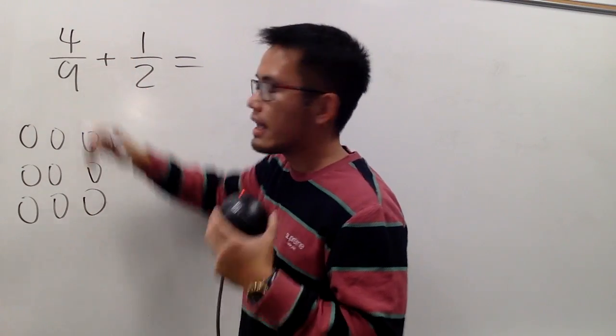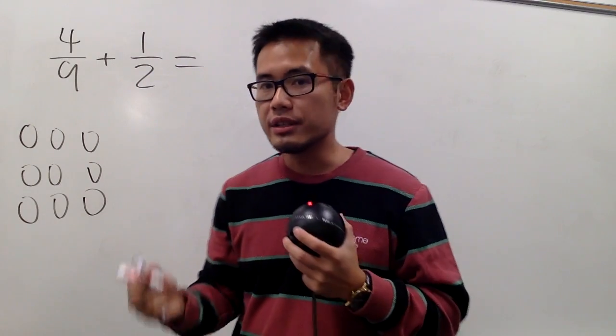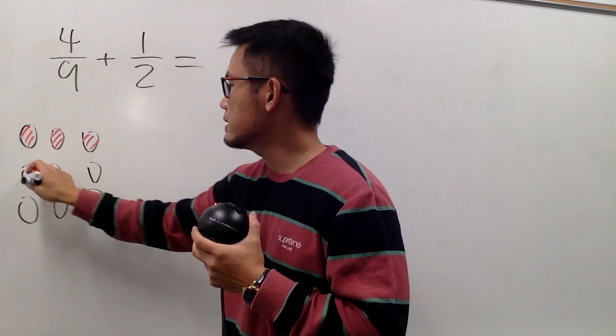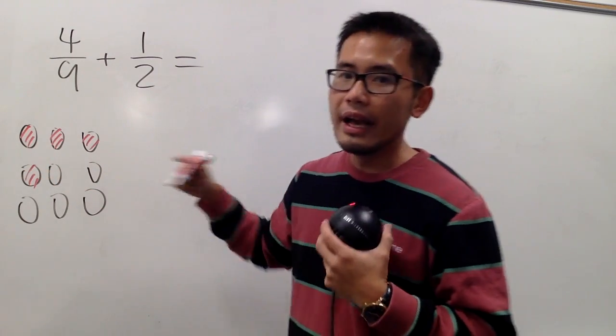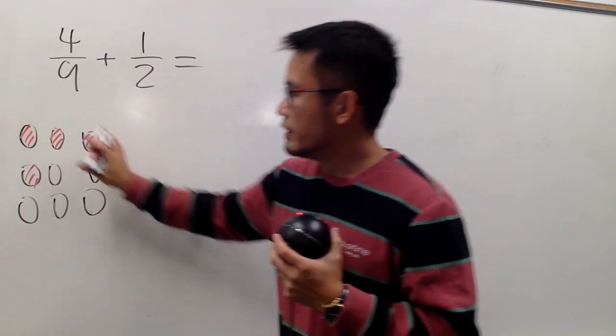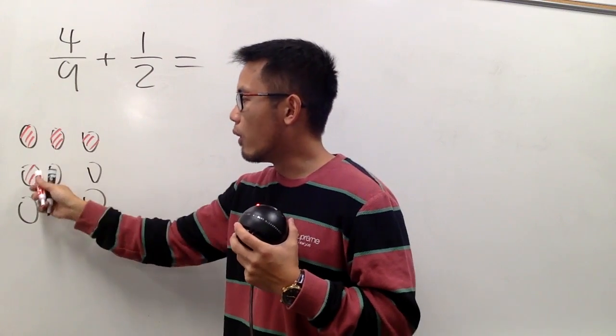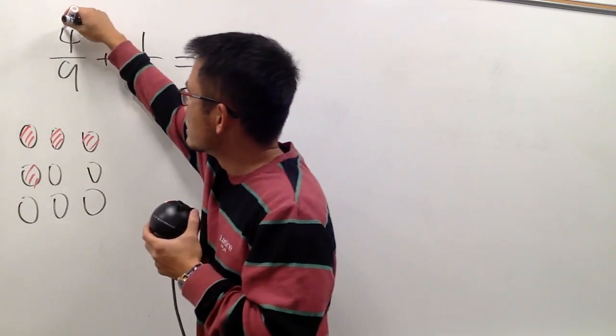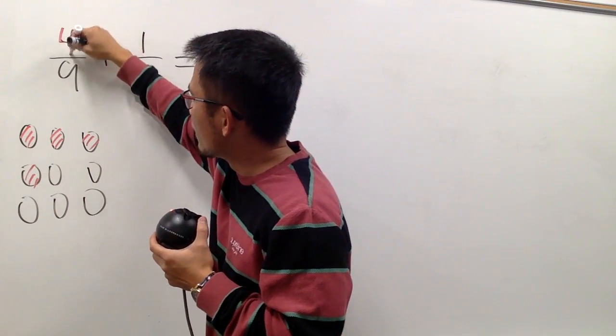And when you have 4 over 9, one way to represent that fraction is, we can just say, we take 4 of these cookies out of the 9. And do you guys agree with me? This picture represents 4 over 9, isn't it? And of course, let me just color the 4, like that.